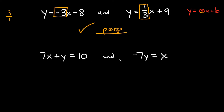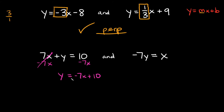This last example compares 7x plus y equals 10 and negative 7y equals x. First, put both into slope-intercept form by solving for y. For the first equation, subtract 7x from both sides — the 7x's cancel — leaving y equals 10 minus 7x, which we can rewrite as y equals negative 7x plus 10. Now it's in slope-intercept form.